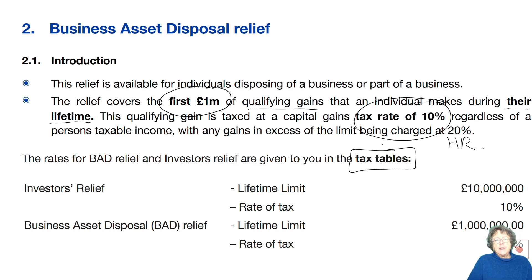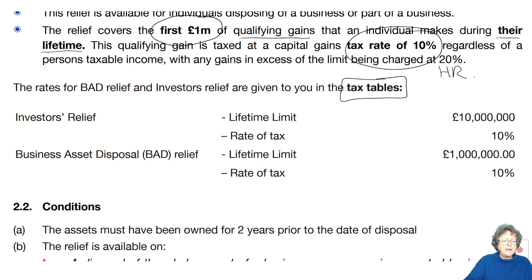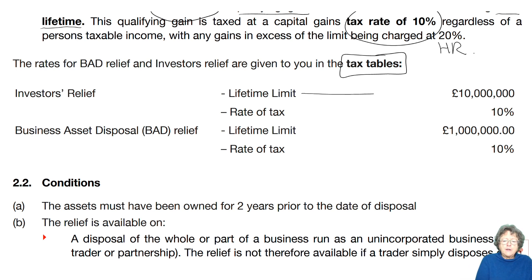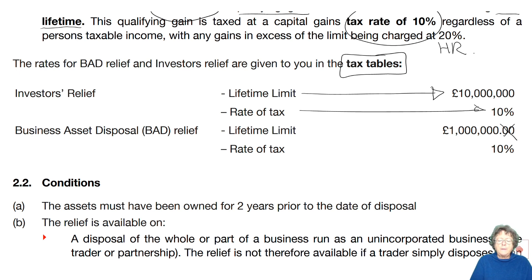The tax tables are at the front of every exam. Make sure that you read them, use them, and never guess. Your Investors' Relief is slightly different — you get £10 million for that. That's the lifetime limit of £10 million at a rate of 10%. Business Asset Disposal Relief is only £1 million, also at 10%.